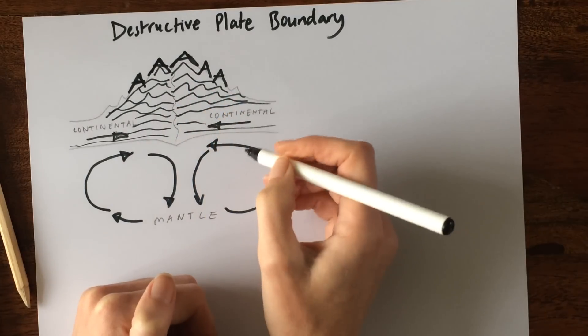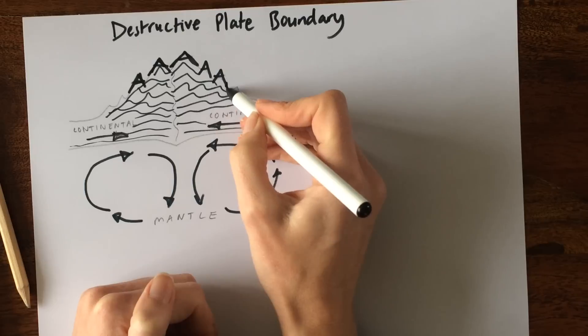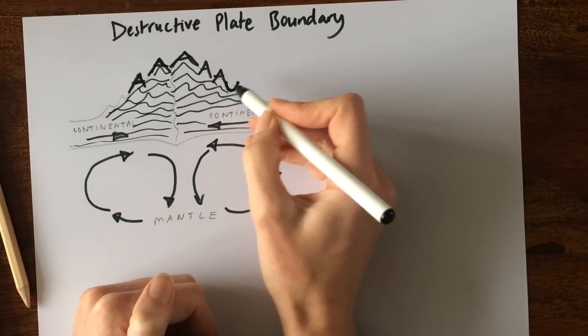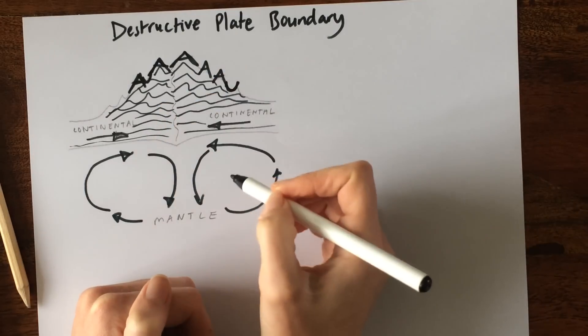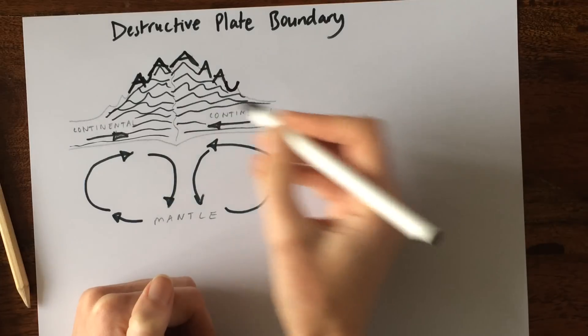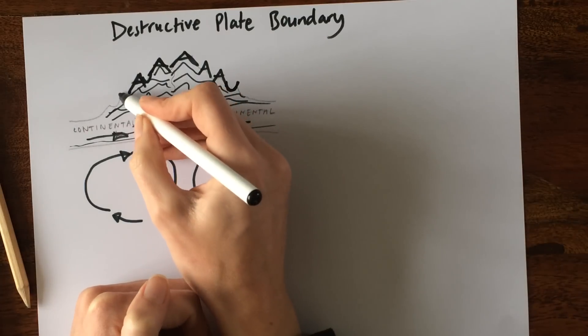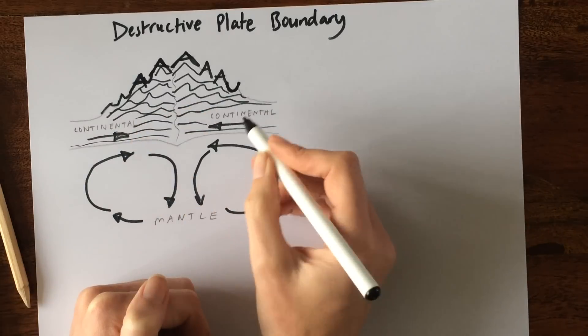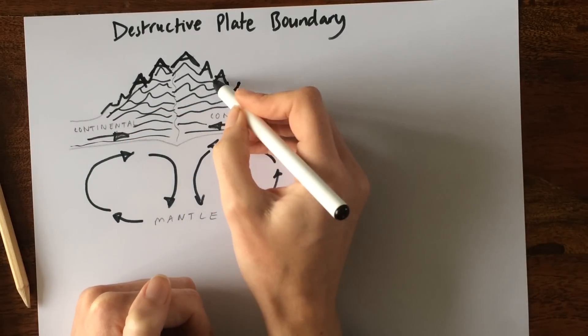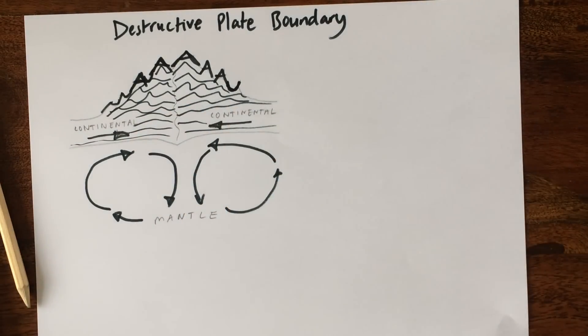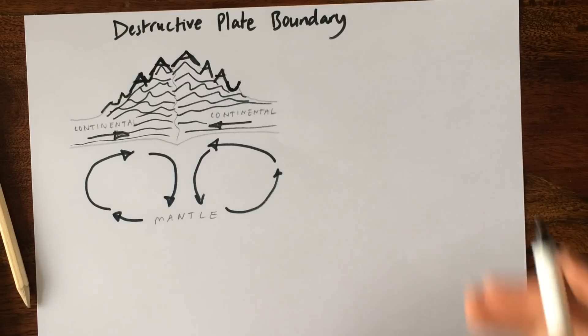Where we have the sinks, they're called the synclines. So we end up with a sink there and a peak there, sink there, peak there. So these are the synclines and these are the anticlines. And that's really our plate boundary. So to summarize.